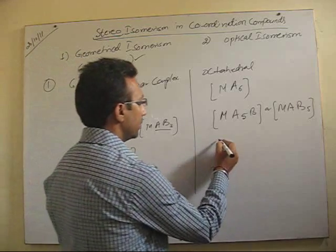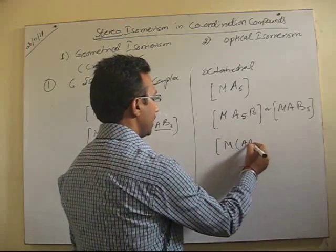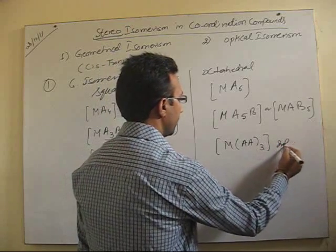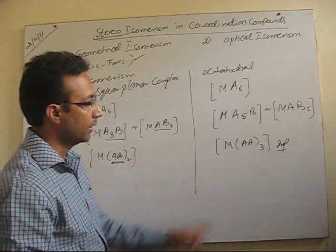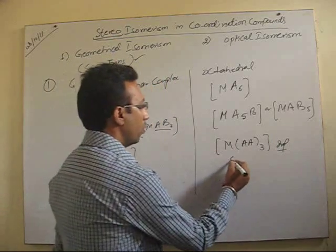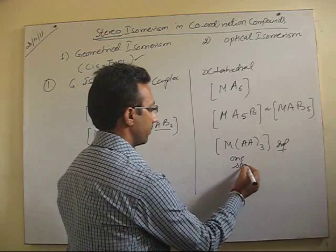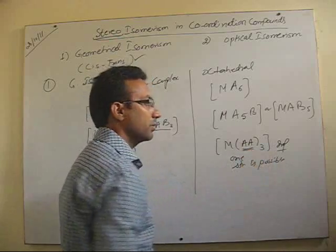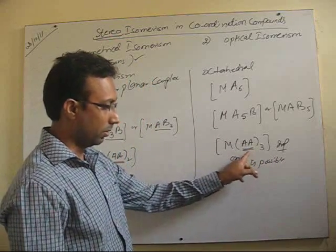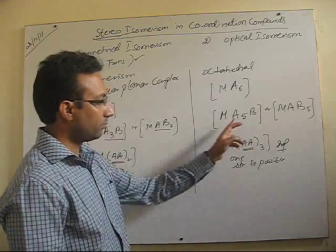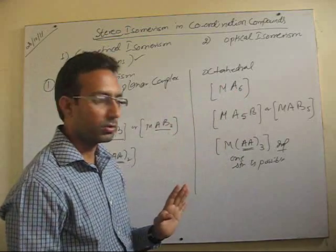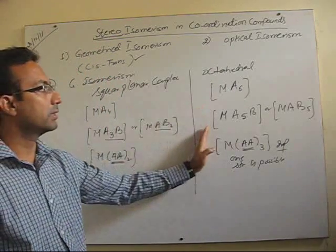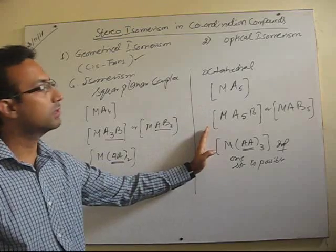The complex like MA3 is very important and we will discuss it later when we discuss optical isomerism. In this particular example only one structure is possible. Geometrical isomerism — cis and trans — are not possible because both the donor atoms are the same. Here also only one structure is possible.